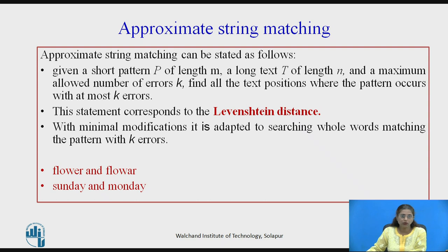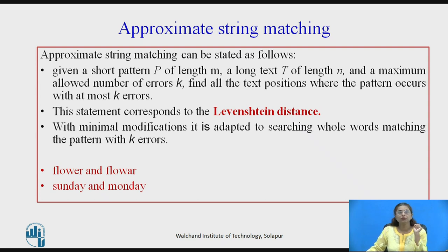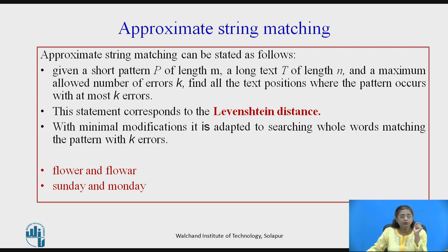Let us understand approximate string matching. This problem can be stated as: you are given a short pattern p of length m and a long text t of length n, and the maximum allowed number of errors is k. We have to find all the text positions where the pattern occurs with at most k errors. This difference or distance is generally called edit distance. With minimal modifications, it is adapted to search whole words matching a pattern with k errors.